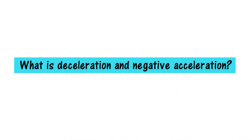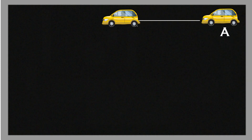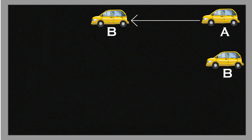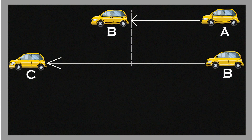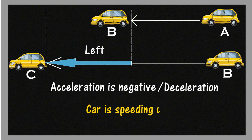What is deceleration and negative acceleration? If I ask: does deceleration mean the car is slowing down? We know deceleration equals negative acceleration. The answer is both no and yes. No — in the case where a car moves from point A to B and speeds up from B to C: the change in velocity is towards the left, so acceleration is negative, but the car is speeding up. So deceleration does not always mean slowing down.